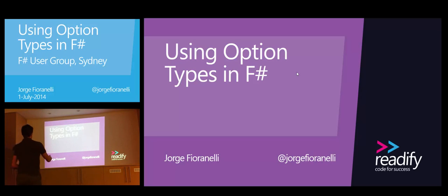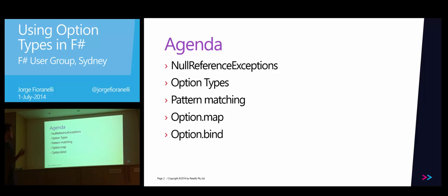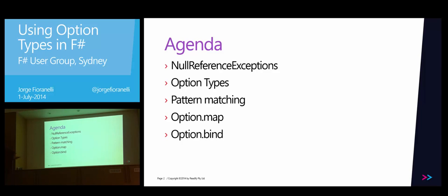We will give a quick introduction to why null reference exceptions are happening in C#, why we are so used to seeing them. Then we will see why option types are there and which type of problem they are solving. Then how to consume them using pattern matching. And then we will see two more ways of using option types — how to handle or manage them using the map and bind functions.